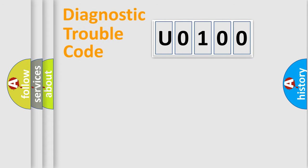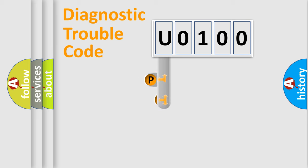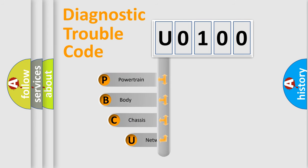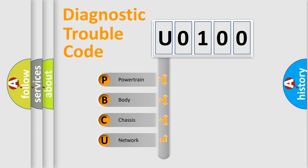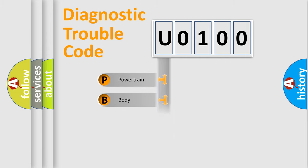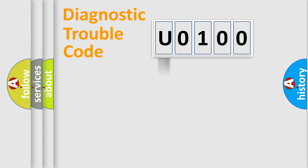Let's do this. First, let's look at the history of diagnostic fault code composition according to the OBD2 protocol, which is unified for all automakers since 2000. We divide the electric system of the automobile into four basic units: Powertrain, Body, Chassis, and Network. This distribution is defined in the first character of the code.